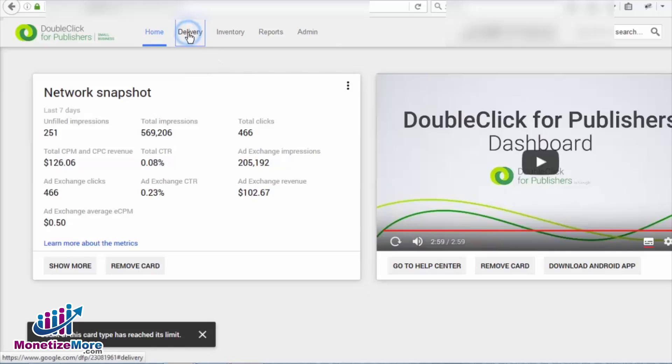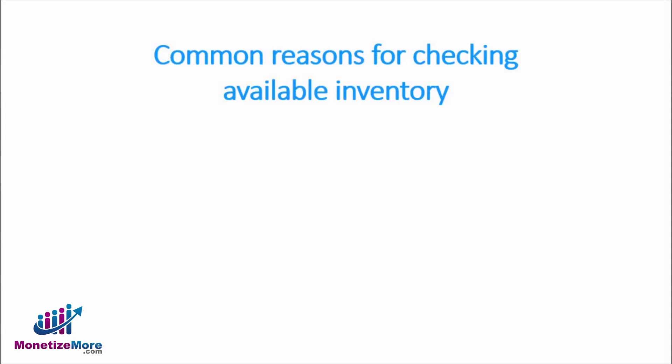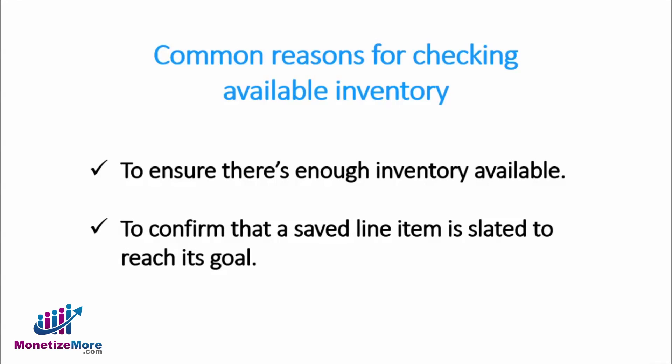Let's first log into our DFP account and navigate to the Delivery tab. The most common reason for checking available inventory is to ensure that there is enough inventory available when creating a line item that requires a specific quantity of impressions. The second most common reason is to confirm that a saved line item is slated to reach its goal. If the line item cannot meet its impression goal, the forecast feature in DFP can help the ad optimizer determine what changes need to be made in the settings and targeting sections in order to meet the goal.